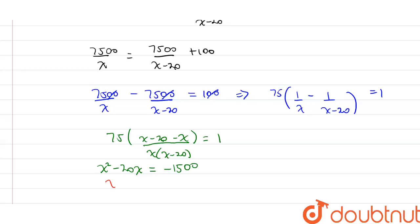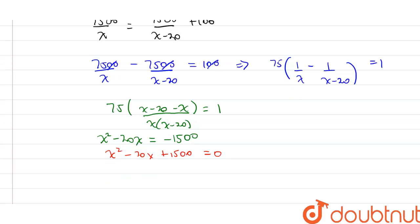So we get the quadratic equation x squared minus 20x plus 1500 equals to 0. Now upon factorization...